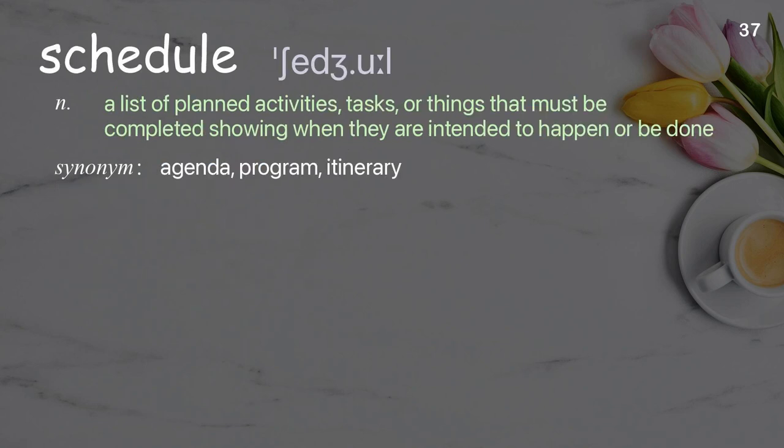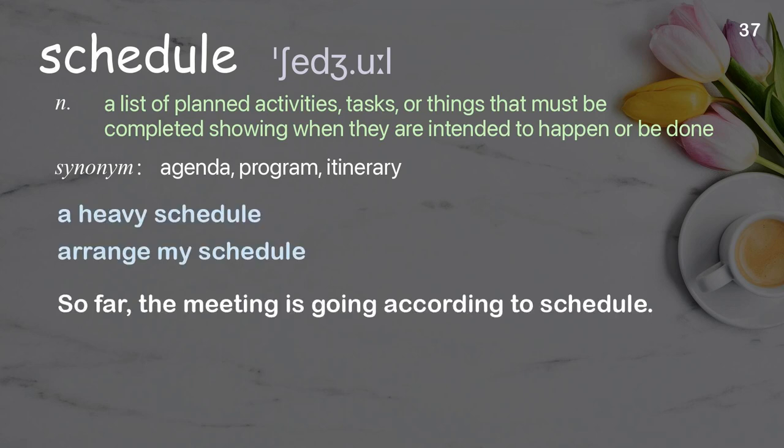Schedule: a list of planned activities, tasks, or things that must be completed, showing when they are intended to happen or be done. Examples: A heavy schedule. Arrange my schedule. So far, the meeting is going according to schedule.